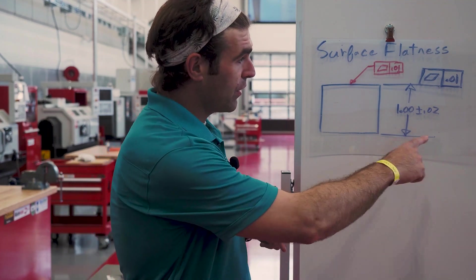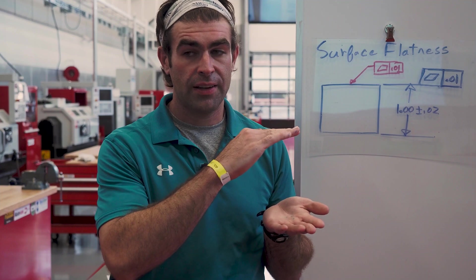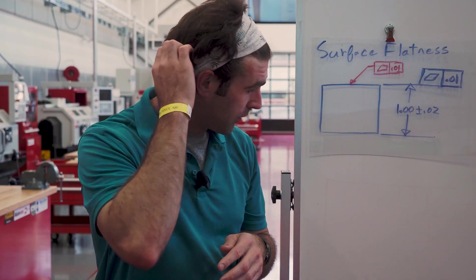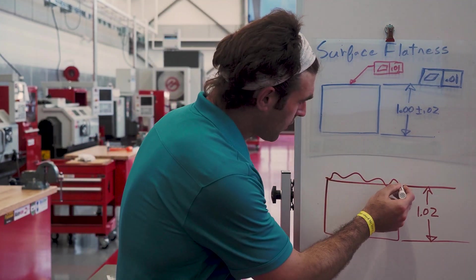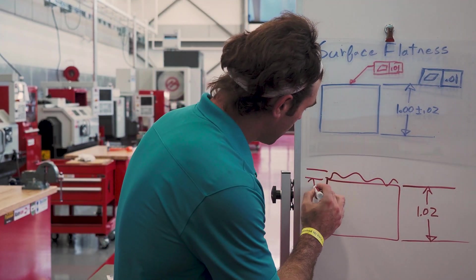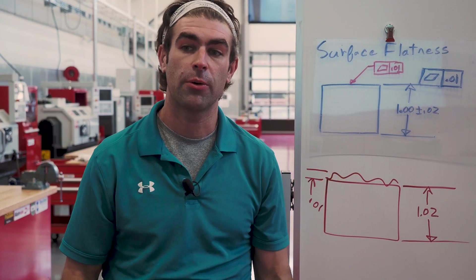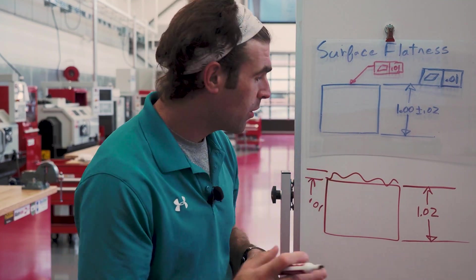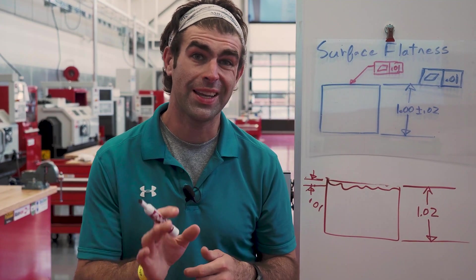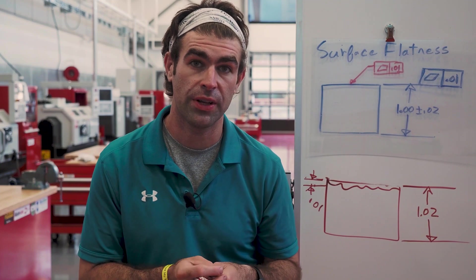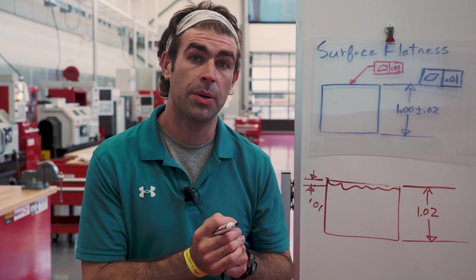What that means is that if this block comes in at one inch and 20 thou, so 1.02, the flatness can't go over the top of the part. If we measure the part and it comes in at 1.02, we can't say we have 10 thou of flatness on top of that — that would violate the boundary of perfect form. We can have flatness as long as it comes in under that MMC limit.